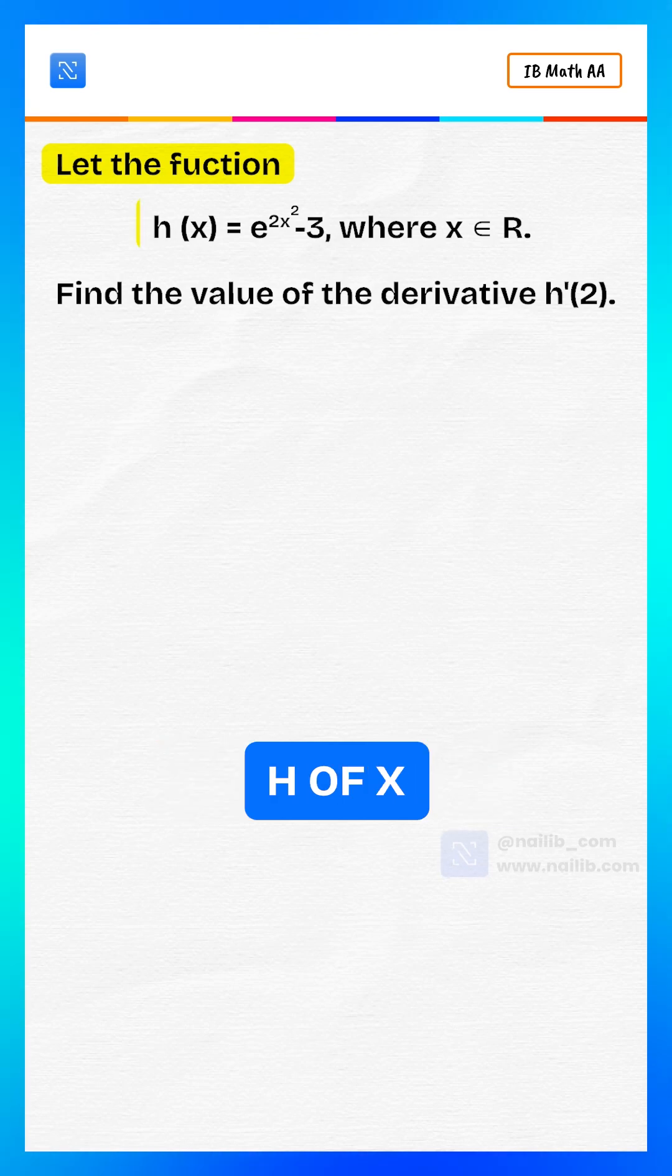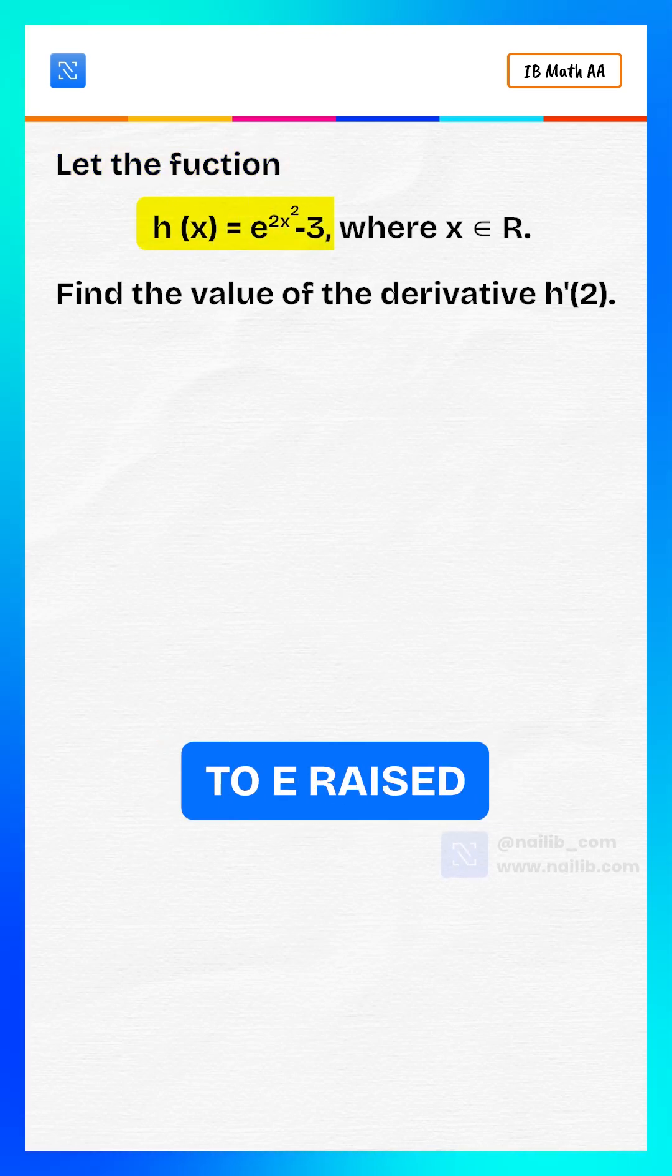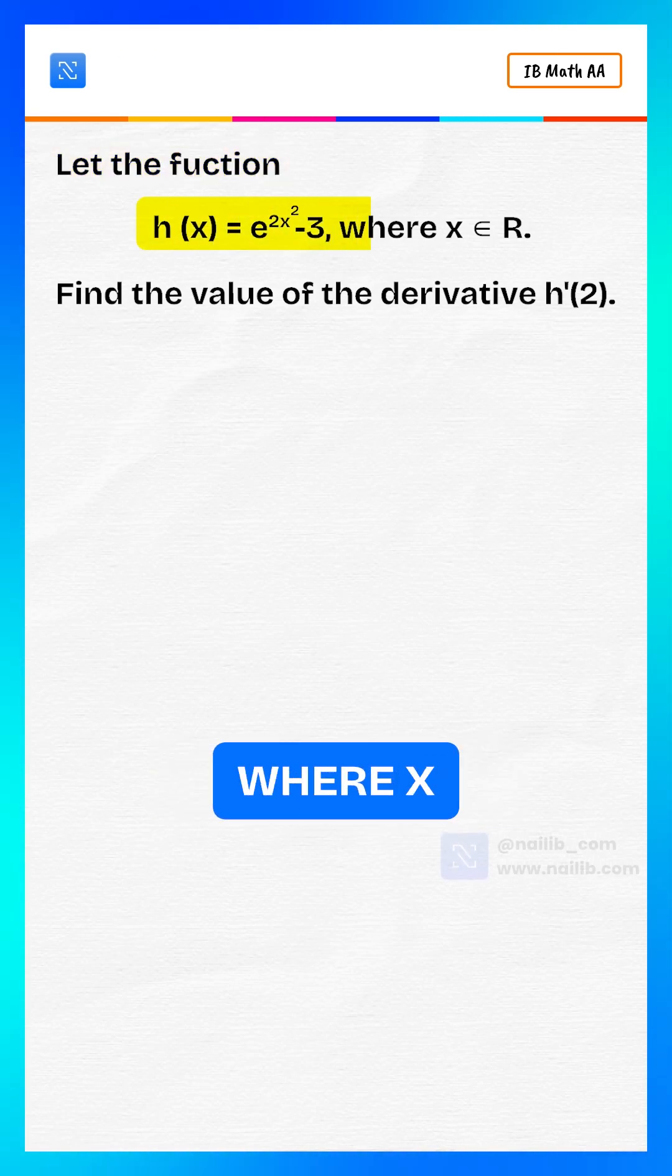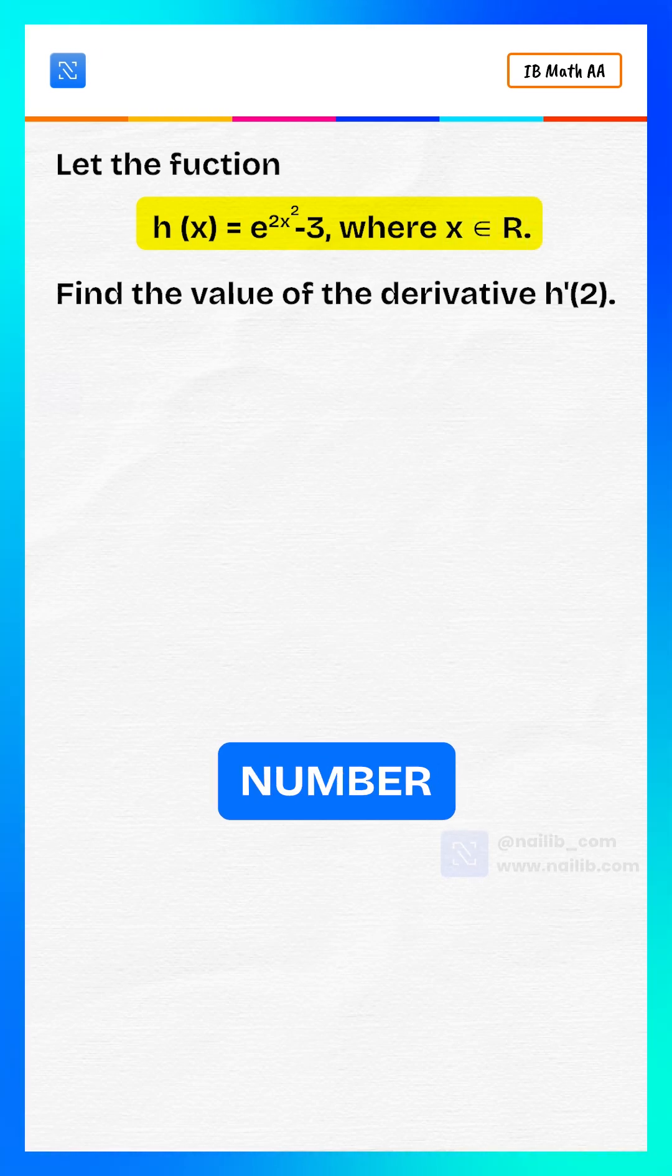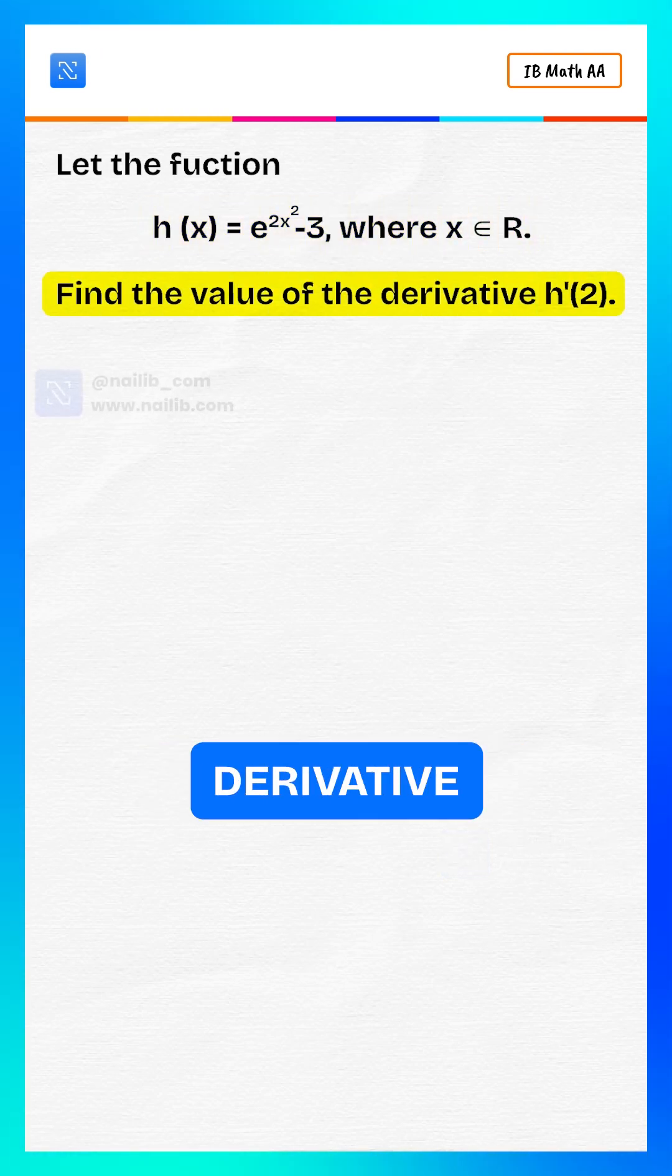The function h of x is equal to e raised to the power of 2x squared minus 3, where x is a real number. Find the value of the derivative of h at x equals 2.